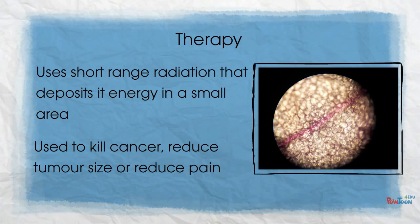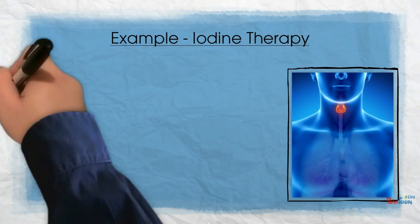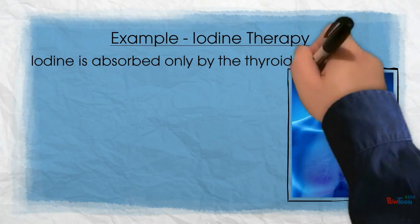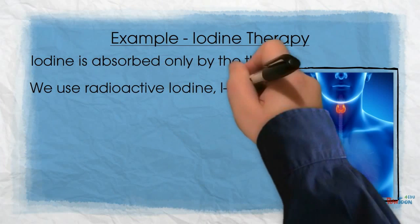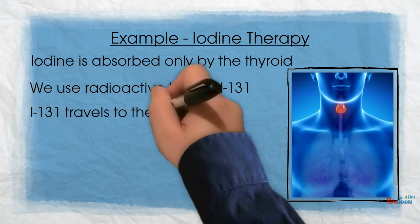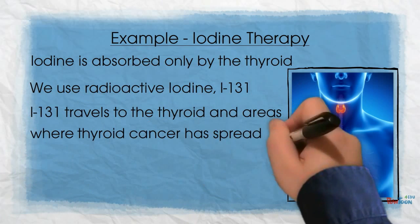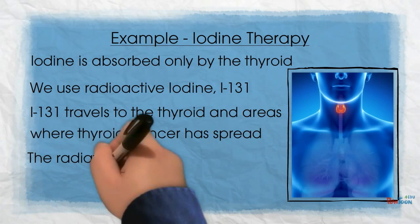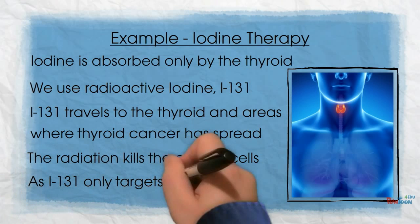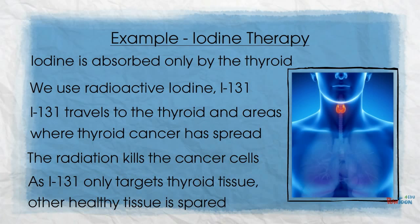Let's look at an example. Iodine therapy is used to treat thyroid cancer. The only part of the body that absorbs iodine is the thyroid, so we can use a radioactive form of iodine, I-131, to treat thyroid cancer. The I-131 is absorbed by the thyroid and any thyroid cancer that has spread to other parts of the body. The radiation then kills the cancer with minimum damage to the rest of the body.